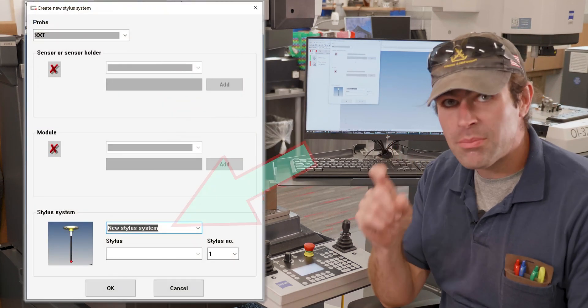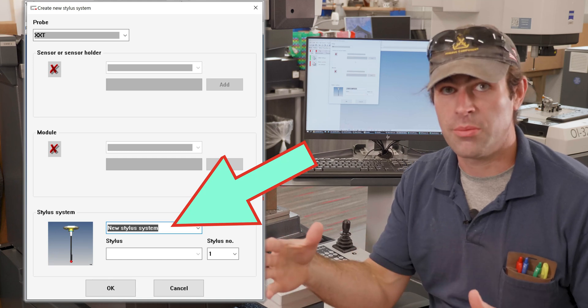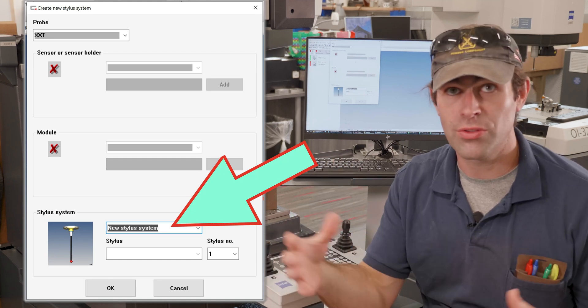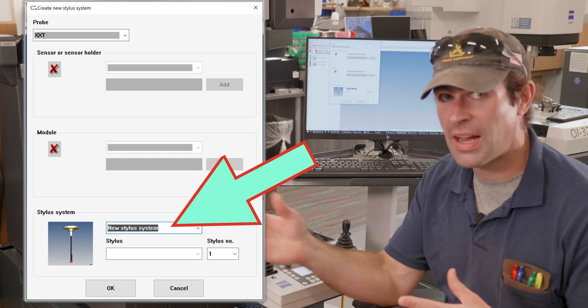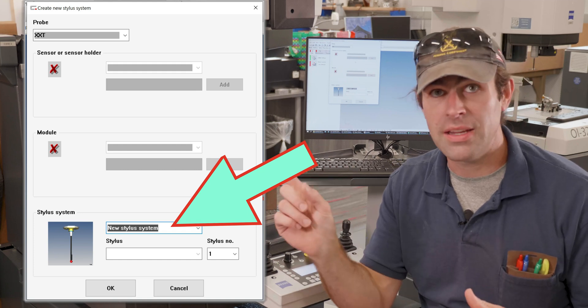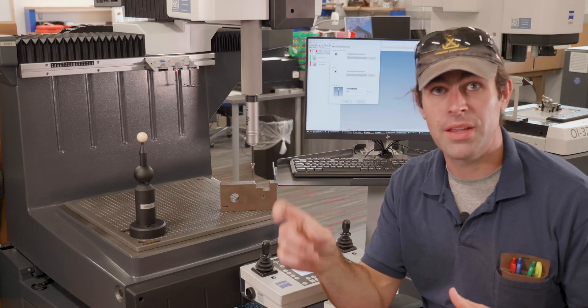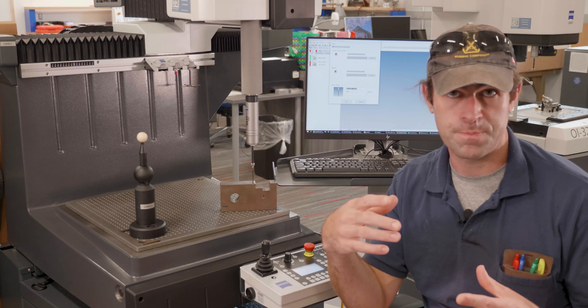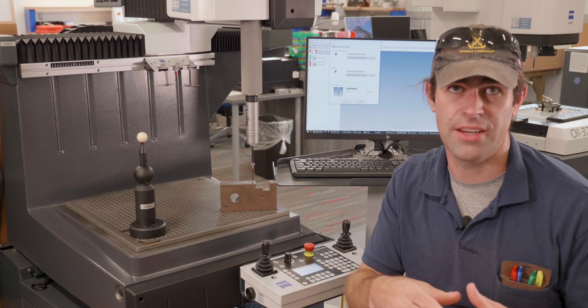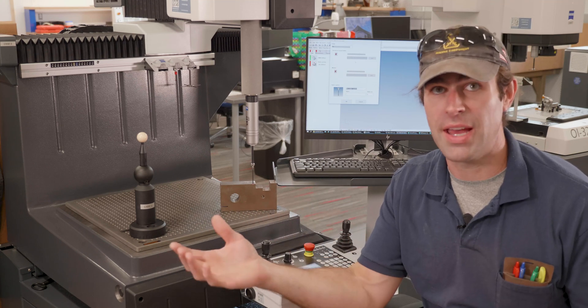Okay, now we've got to give it a name. The first name is for the stylus system. What I'll usually do, and what we do at the college here, is put whoever made it. So I'm going to put my last name and then what it's for. This will just be Z minus. So I'll say Odell Z minus.